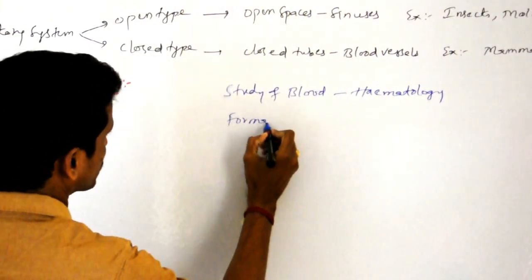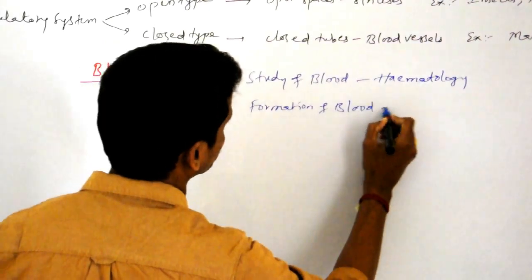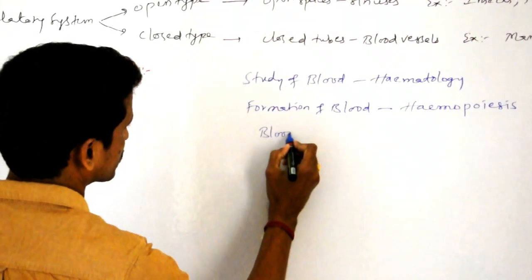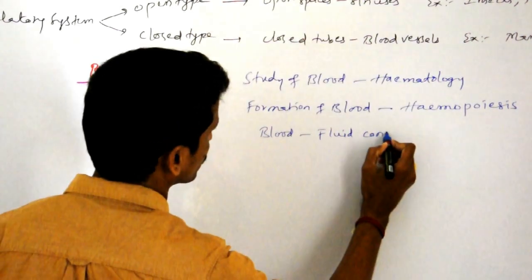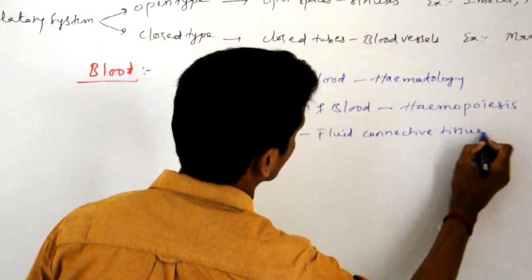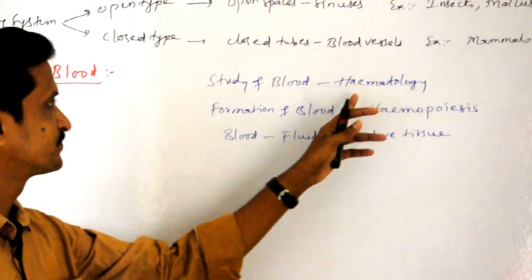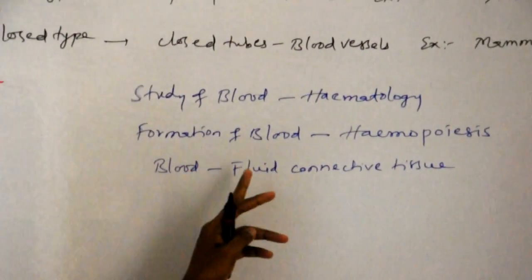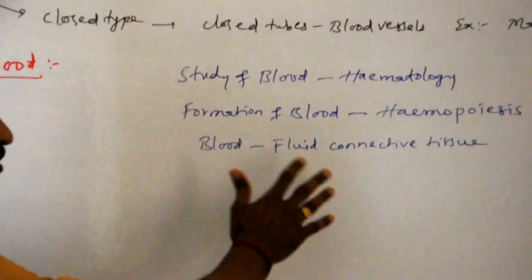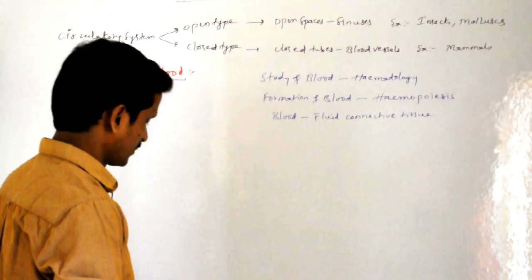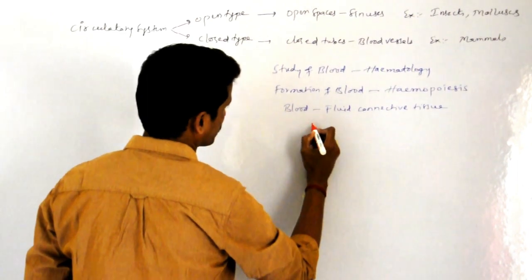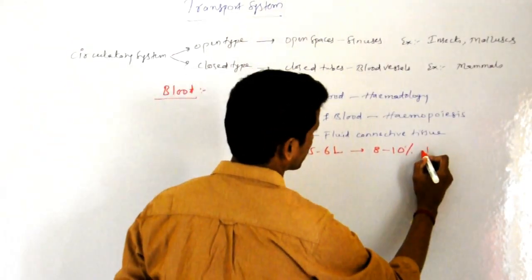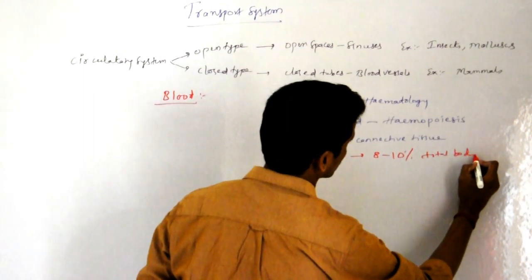Formation of blood is called hemopoiesis. Blood is commonly called a fluid connective tissue — it is fluid in nature and connects various parts of the body. A healthy adult individual possesses 5 to 6 liters of blood, which constitutes 8 to 10 percent of total body weight.